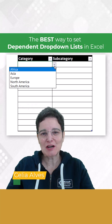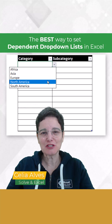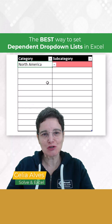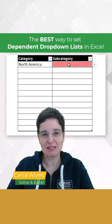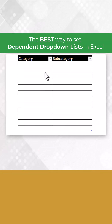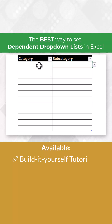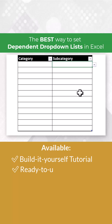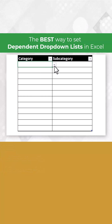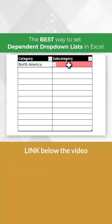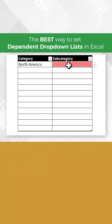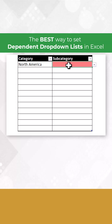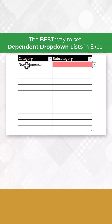Drop-down lists are a fundamental feature to ensure clean data input in Excel. Imagine we have this input table with a category column and a subcategory column. For the categories, we will have continents, and for the subcategory, I want to enter a country that belongs to the selected continent.